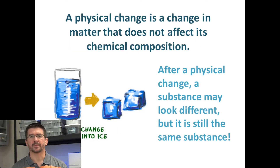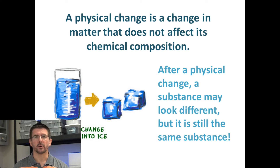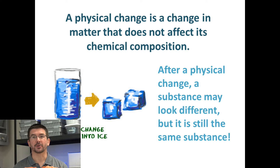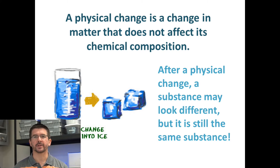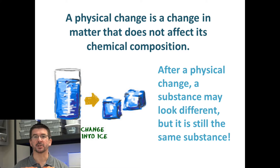Physical properties are a property or characteristic that you can observe and measure without changing the chemical makeup of a substance. Physical changes go right along with physical properties, because a physical change is basically just a change in the physical properties of an object. A physical change happens without any kind of chemical reaction, without a new substance being formed. After a physical change, even though a substance may look different, it's still the same original substance we started with.